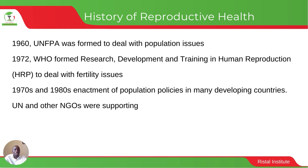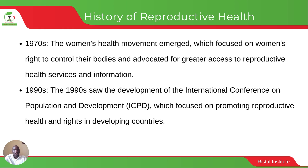In the 1970s and 80s, developing countries started to enact policies around population. Many UN agencies and NGOs supported the development of these policies. The movement was also toward ensuring that women have full control over their bodies, advocating for more access to reproductive health services and information.